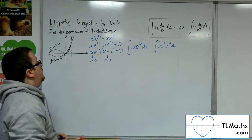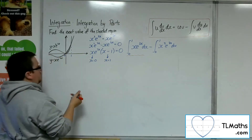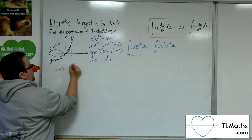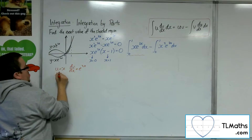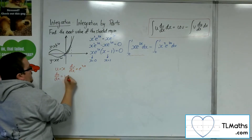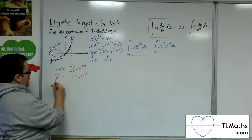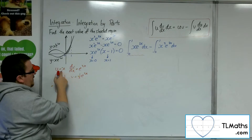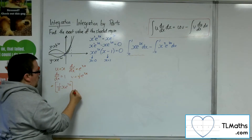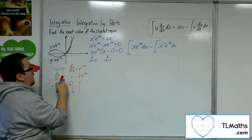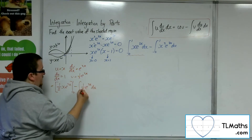Let's take the first integral. Using integration by parts: u equals x, dv by dx equals e to the 2x. So du by dx equals 1, and v equals 1 half e to the 2x. Applying the formula gives u times v: 1 half x e to the 2x evaluated between 0 and 1, take away the integral of v times du by dx, which is 1 half e to the 2x dx, evaluated between 0 and 1.